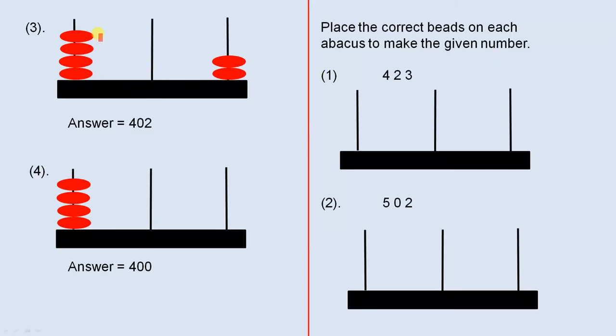Here we have 4 beads on that rod and 2 on this one. Here we have no tens, so no beads here. That represents tens, so there are none. In other words, we have 400, no tens, and 2, which is 402.